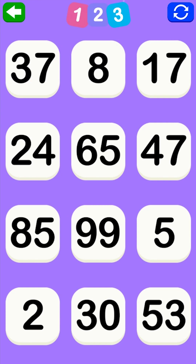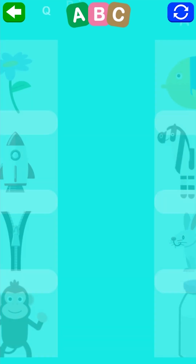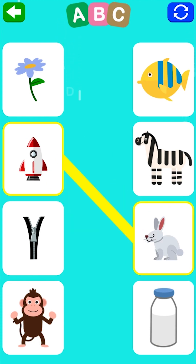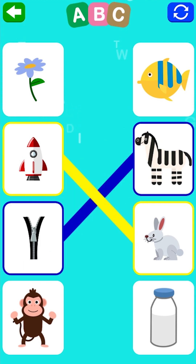Click on the number. 8, 8. Very well, you're right! Connect the images. R is for rocket, rabbit. Z is for zipper, zebra.